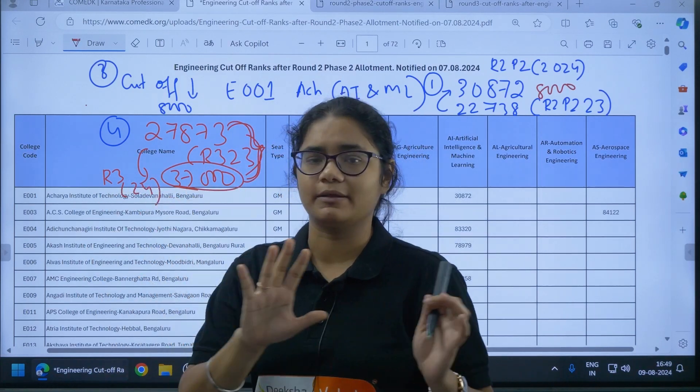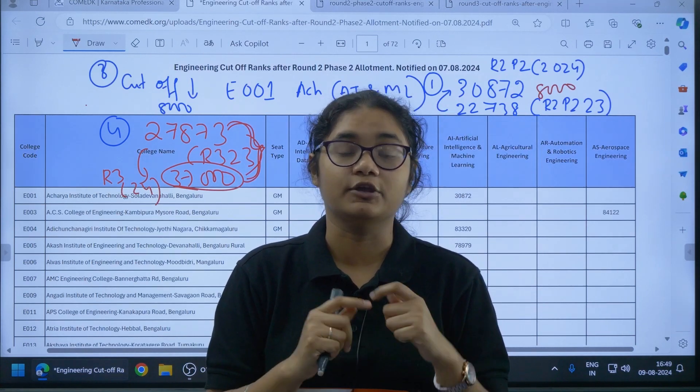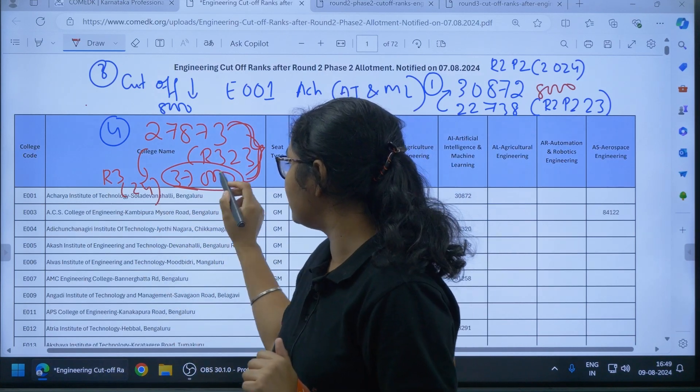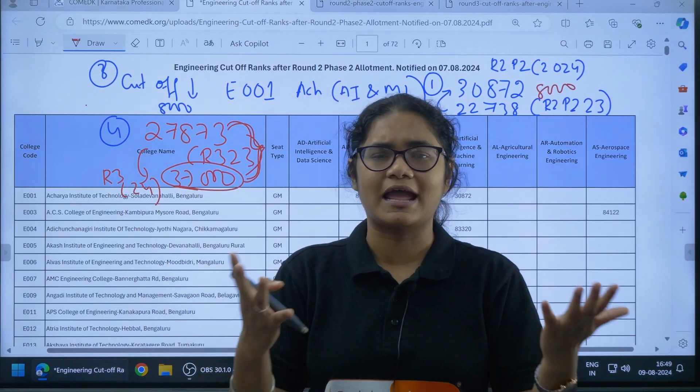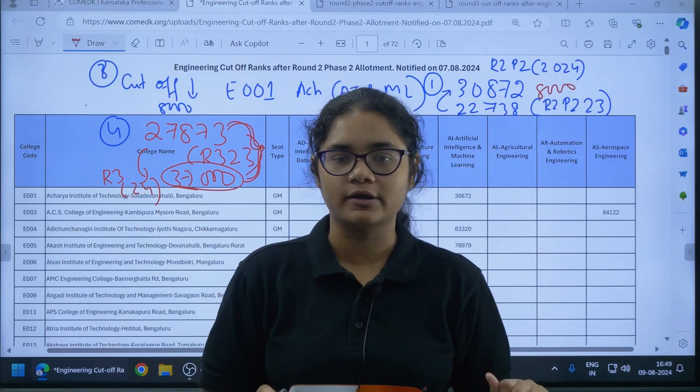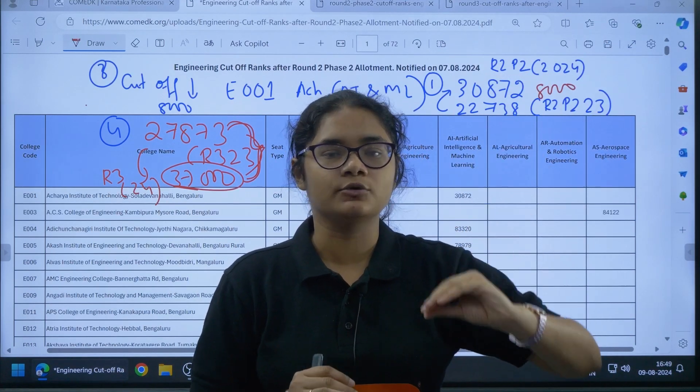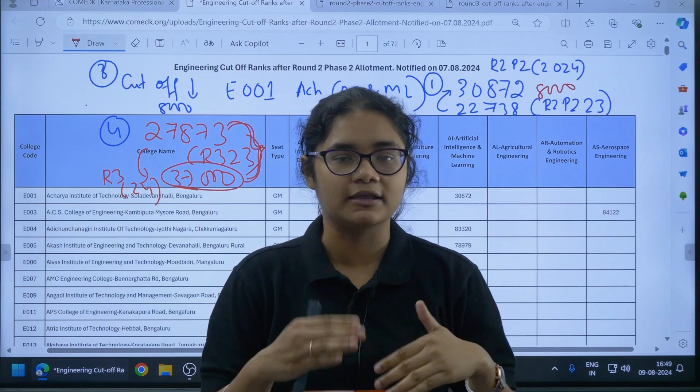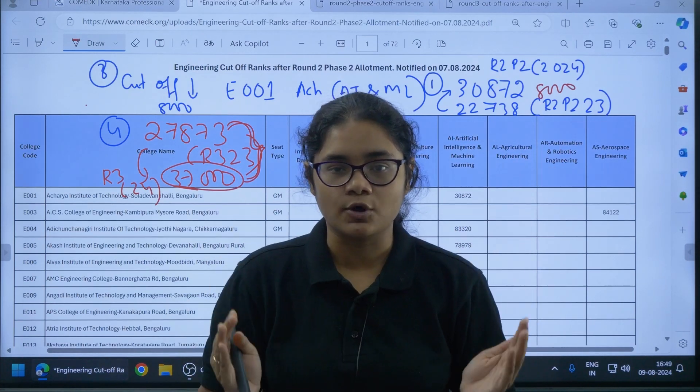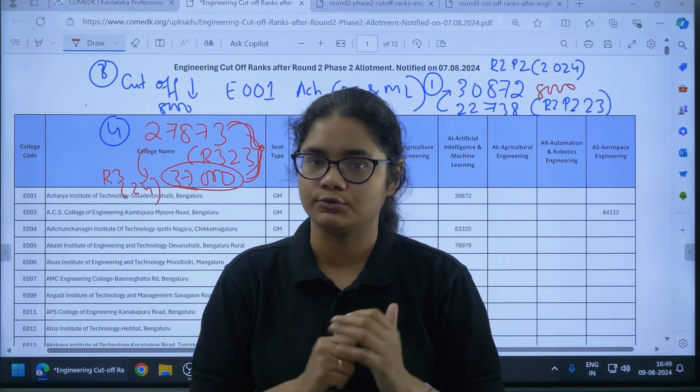Now after getting this data, you got a range, right? This 37,000 maybe the cutoff for Round 3. Now check your cutoff, your rank in the COMET K exam. If your rank is somewhere between 37,000, if your rank is between 35,000, 32,000, then definitely you will get the seat in this college and you can take this option to the first or in your preference list you can give it more priority. So this you have to do for all those options where you really want to join those colleges and those courses.